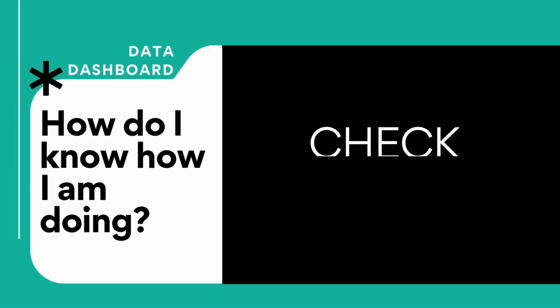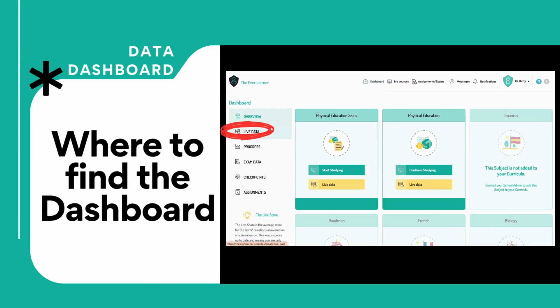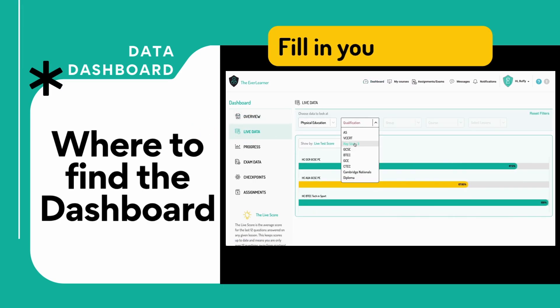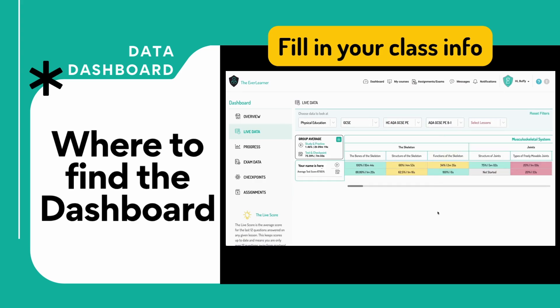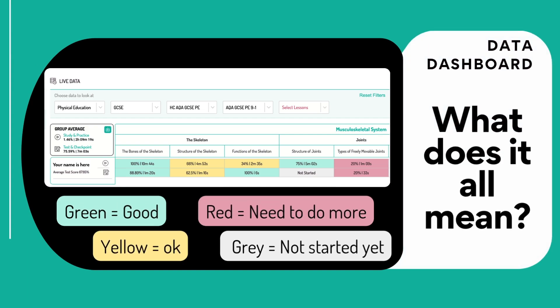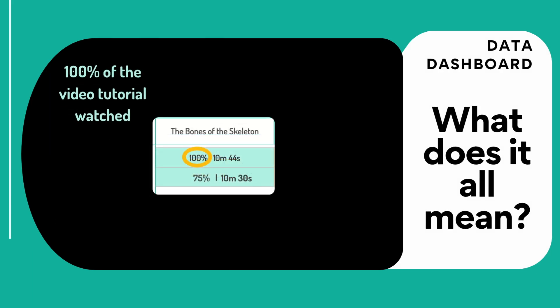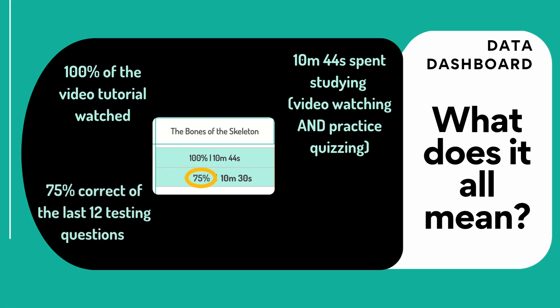Data dashboard: how do you know how well you're doing? Check the dashboard — it's got all those statistics. Go to dashboard at the top, then live data, fill in your class. Green is good, yellow is okay, red means you need to do more, and gray means you've not started. You can see percentages such as 100% of the video tutorial watched, 10 minutes 44 seconds studying, and 75% correct out of the last 12 questions.